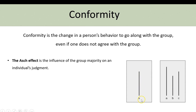In reality the correct answer was C. The power of conformity influenced the participant to agree with the other people that the B line was in fact the same length as X, even though they didn't agree with the group.